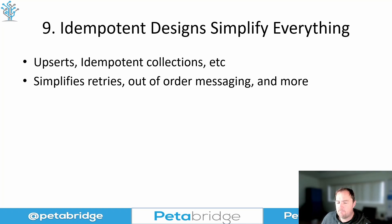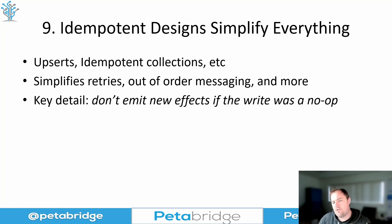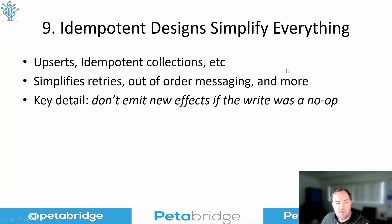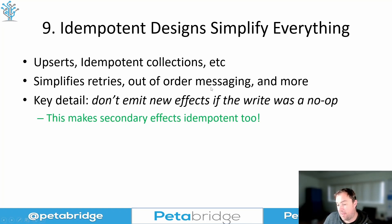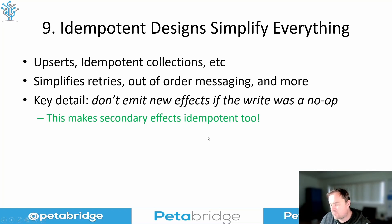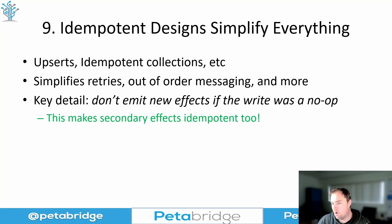One other key detail: if the first-order effect of updating a collection was a no-op — you added an item that already exists to the hash set — and you explicitly check whether it was a no-op and don't emit any additional downstream effects, then your secondary effects also become idempotent. Good example: we're going to insert a customer into the database and then send them a welcome email. If you do an upsert and see that the row already existed so no new rows were created, and you don't send the welcome email — congratulations, your welcome email is now also idempotent.